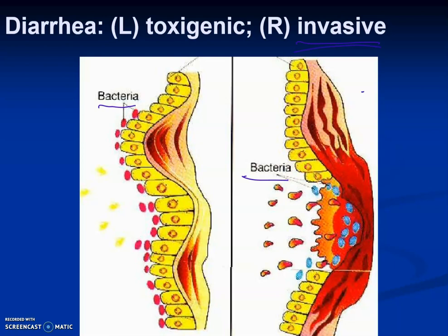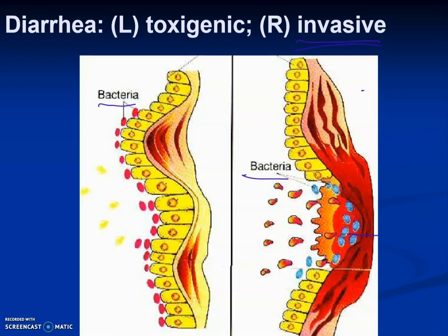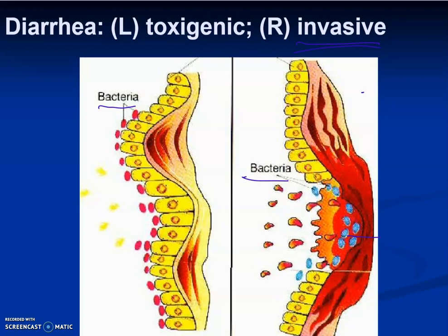In the worst-case scenario, the bacteria break all the way through the intestinal walls, causing major abdominal bleeding. An example of invasive diarrhea is the diarrhea caused by E. coli O157:H7, often referred to as bloody diarrhea.